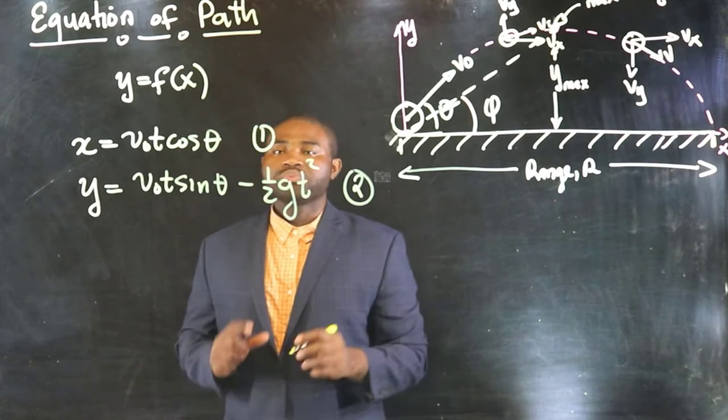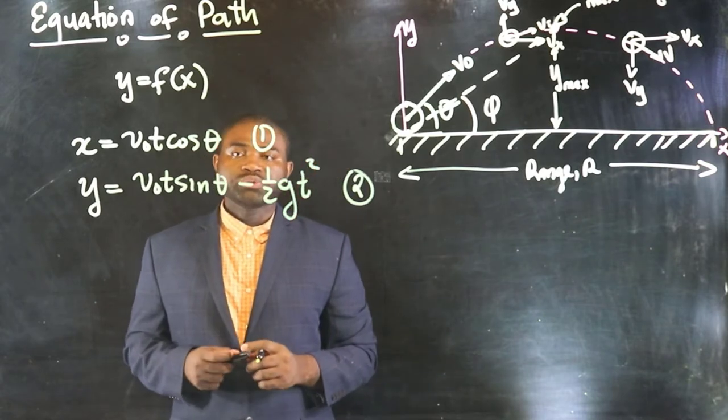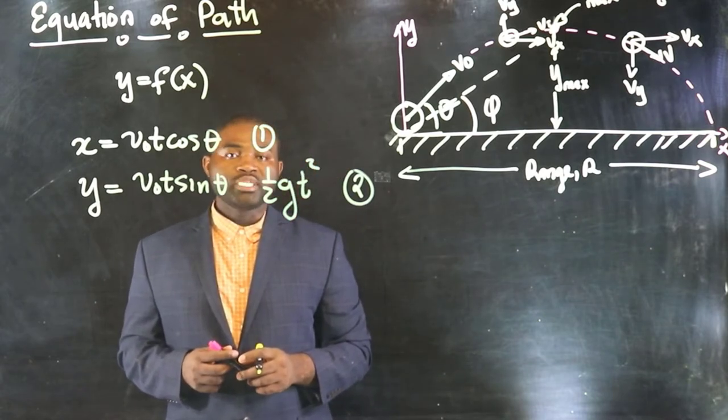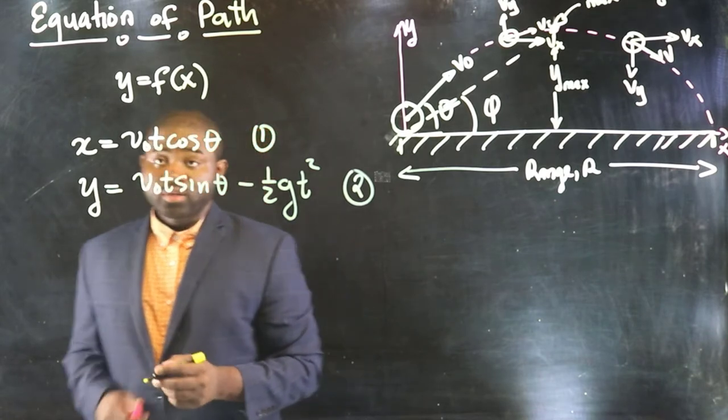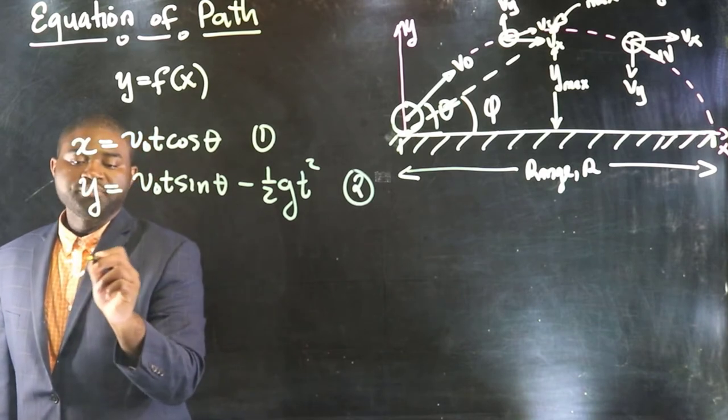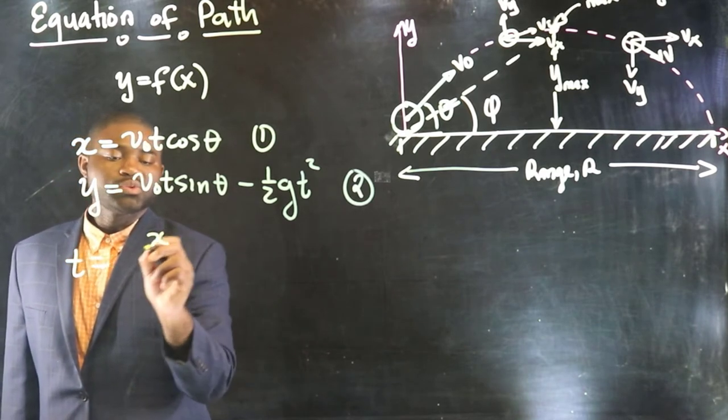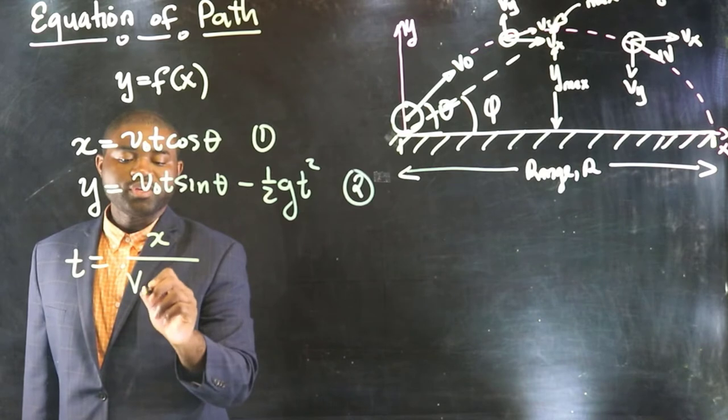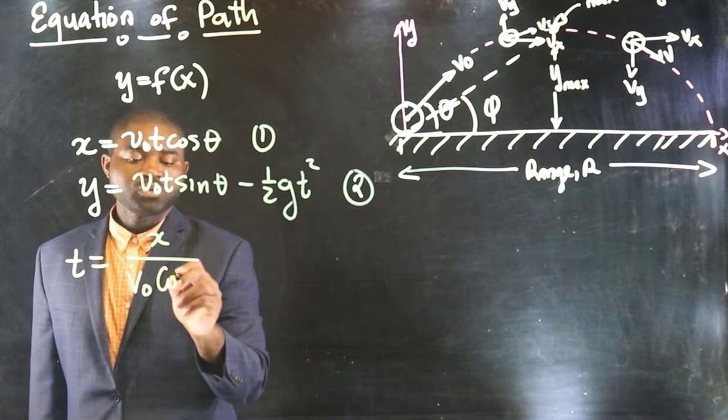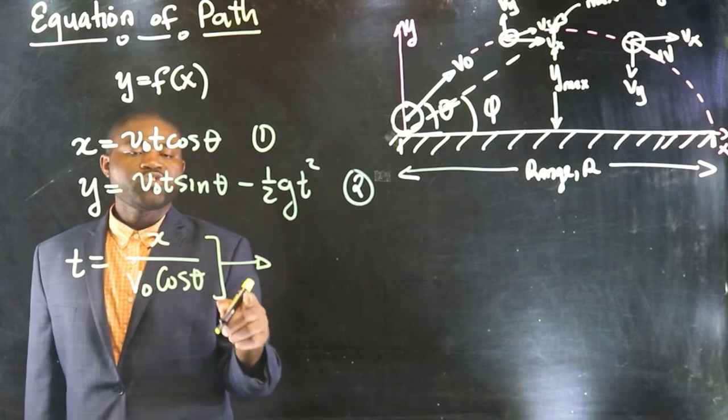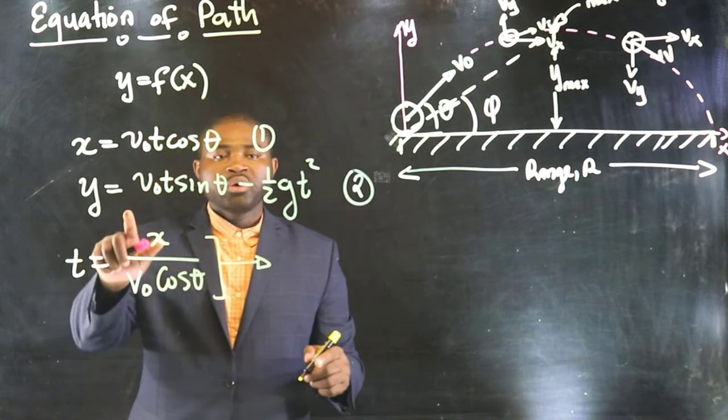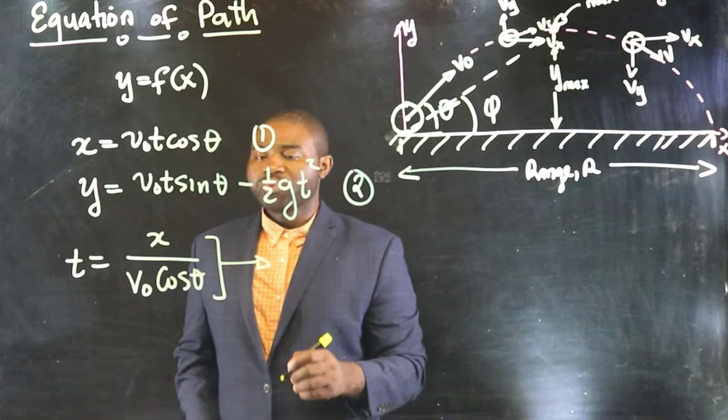So, we need to manipulate equation one and two in such a way as to eliminate time in equation two. And to do that, we can clearly see that t is equal to x divided by v₀ cos θ. So, if we substitute this t in equation two, what do we have?